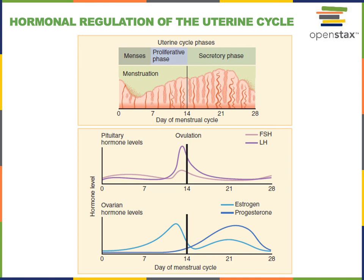Following ovulation, the corpus luteum of the ovary produces progesterone in response to luteinizing hormone. Progesterone then stimulates secretions from the uterine glands during the secretory phase of the uterine cycle, and helps to maintain the endometrium. As progesterone levels fall towards the 28th day of the cycle, declining levels of progesterone stimulate the process of menstruation.